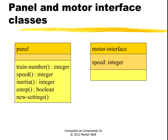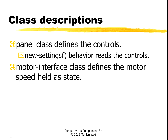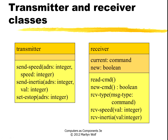We have classes to describe the panel that give us the information set in the knobs: the train number, the speed, the inertia, the emergency stop. We have a function that tells us when these knobs were changed. We also have a motor interface class that specifies the current speed of the motor. The transmitter class has commands to send a speed, send inertia, or send an emergency stop. The receiver class has a function indicating there's a new command, a function to read a command, a function that tells you the type of the latest packet, and functions to get the speed and inertia parameters out of that packet. The emergency stop has no parameters, so no extra function is needed.